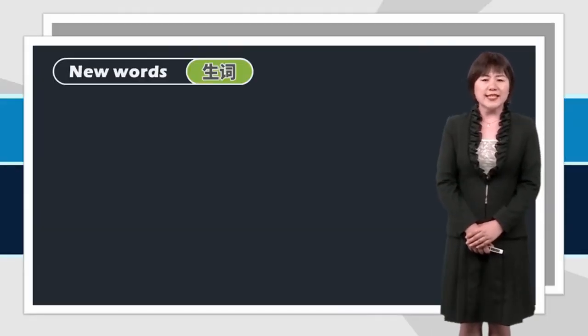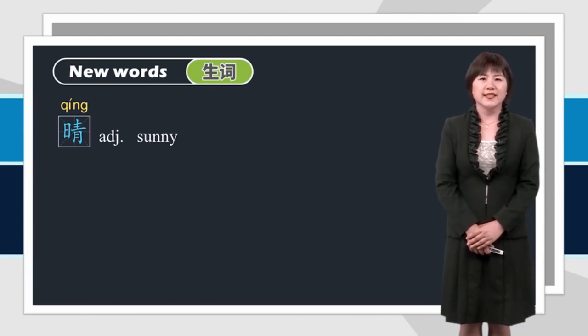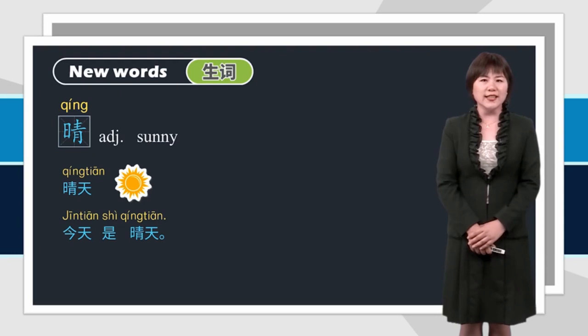Let's see a new word first. 晴, 晴. 尚内. 跟我读. 晴. 晴. 晴天. 今天是晴天.